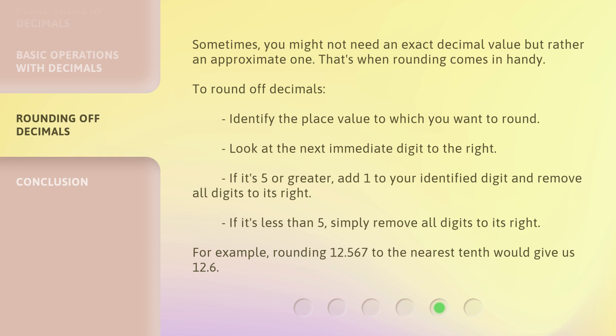For example, rounding 12.567 to the nearest tenth would give us 12.6.